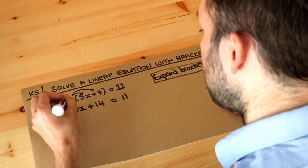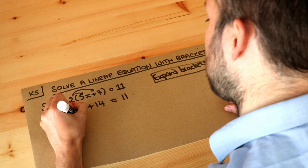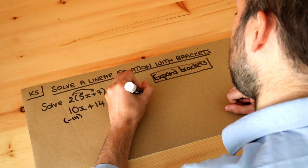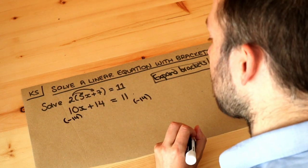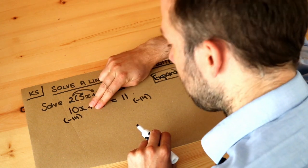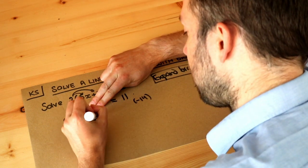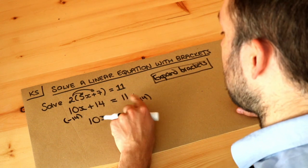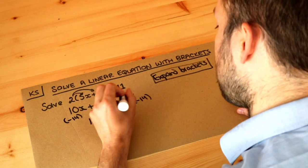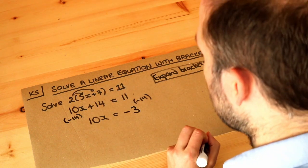The last thing we did was add 14, so we undo it by doing the opposite, which is to subtract 14 from both sides. If we subtract 14 from the left, that gets rid of the plus 14, leaving just 10x. And if we subtract 14 from 11, we get -3.